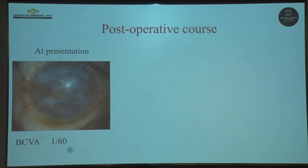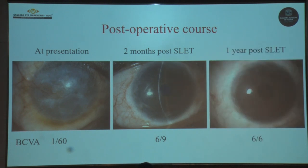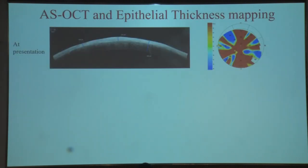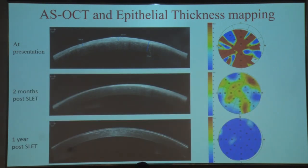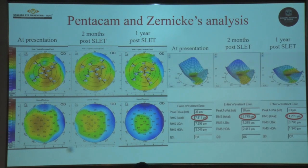Postoperatively, the patient showed remarkable improvement in ocular surface and vision. At two months post-SLIT, regression of vascularization and resolution of scarring were seen, with vision improving to 6/9, and further to 6/6 at one year post-SLIT. Steroids were tapered and the patient was only on topical immunomodulators by one year. Anterior segment OCT and epithelial thickness mapping showed resolution of the preoperative irregular thick epithelium to a more uniform surface at two months and one year. Pentacam and Zernike analysis showed improvement in RMS value from 7.9 to 4.2, reflecting reduced aberrations.